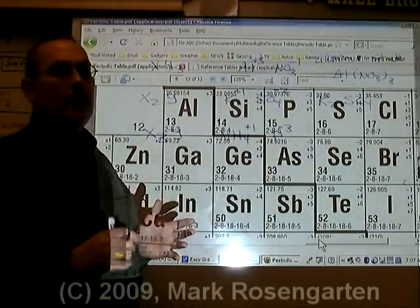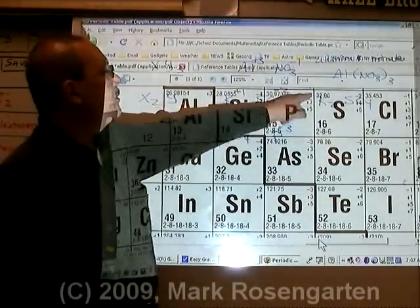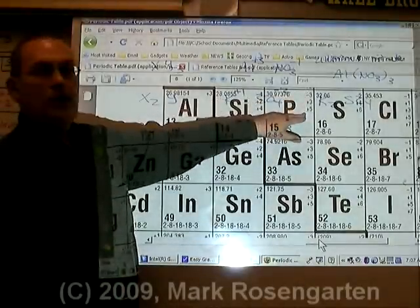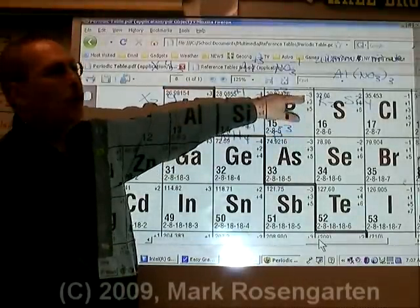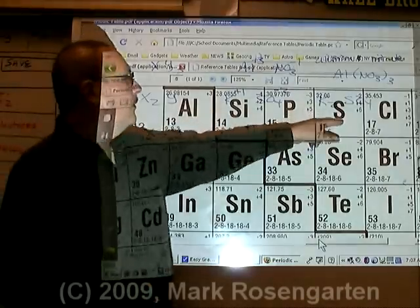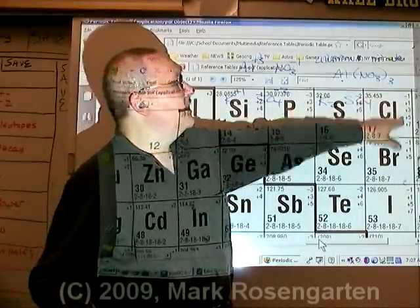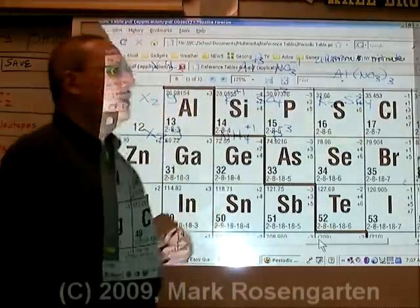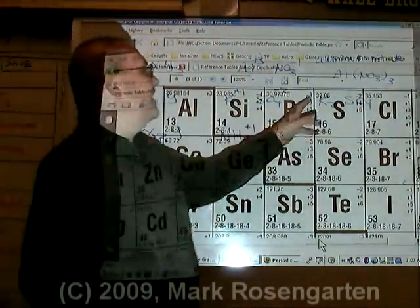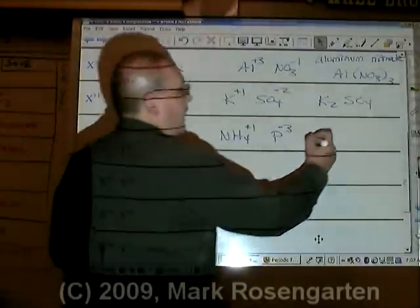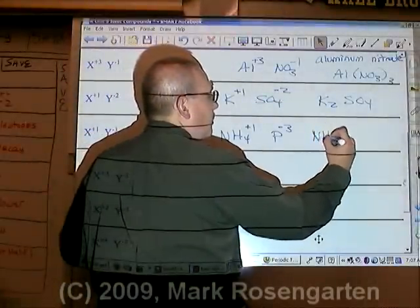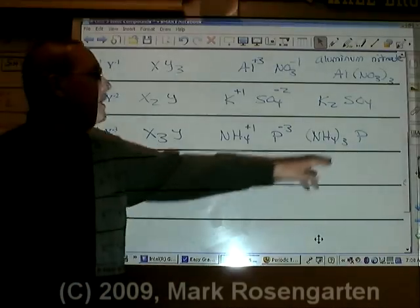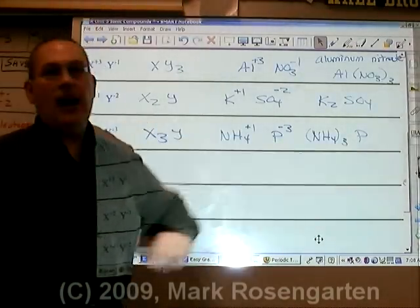On the nonmetal side of the periodic table, the top charge that's listed, the first charge, is the ion charge. Now, phosphorus has three charges listed. Its ion charge is the top one, minus three. The sulfide ion is minus two. Chlorine looks like it's got a lot of different charges. The only one that's an ion charge is the minus one. The first charge listed is the nonmetal's ion charge. So, the formula is (NH₄)₃P. We need to put a parentheses around the ammonium because we're putting a number after it.